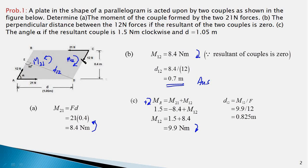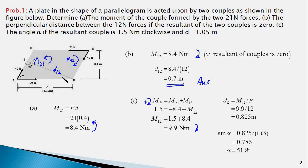The perpendicular distance d12 equals 0.825 meters. From the right-angle triangle AED, we know this side and the hypotenuse, so we can find sin of angle alpha. Sin alpha equals the opposite side d12, which is 0.825 meters, divided by the hypotenuse 1.05, giving alpha equal to sin-inverse of that value, which is 51.8 degrees.